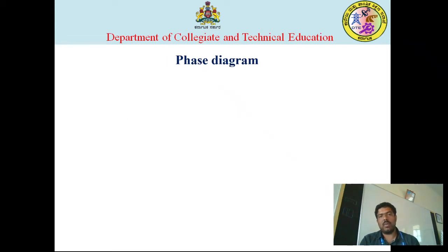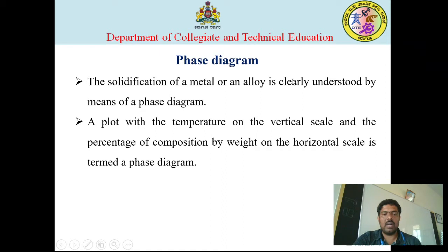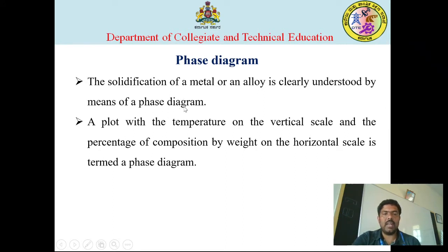Let us discuss about what is the meaning of phase diagram. The solidification of a metal or an alloy is clearly understood by means of a phase diagram. Whenever a metal or an alloy is solidified from molten stage to room temperature, we need to draw a curve between temperature versus composition of carbon percentage. That diagram is called a phase diagram — a plot with temperature on a vertical scale and percentage composition on a horizontal scale.